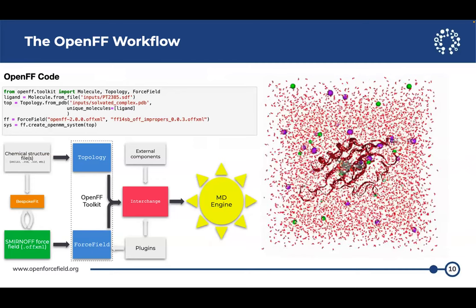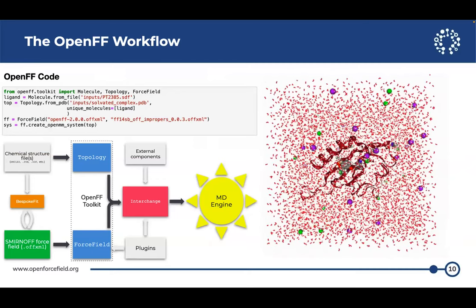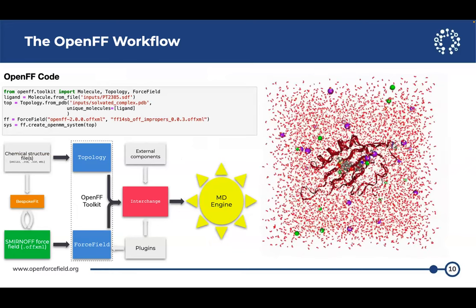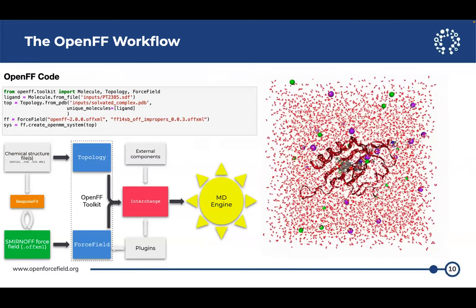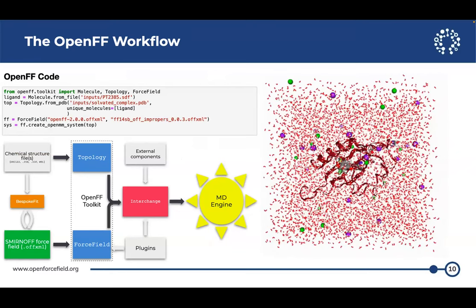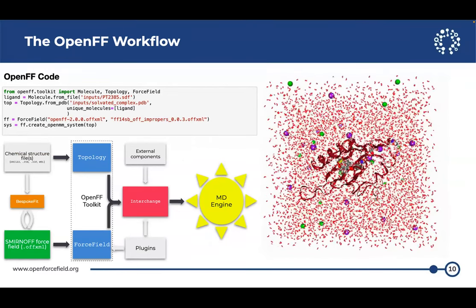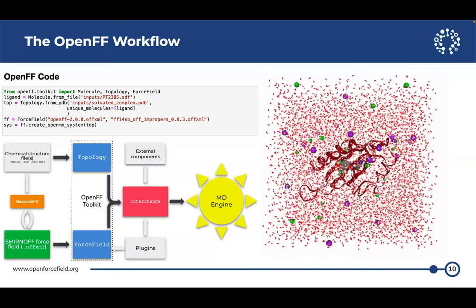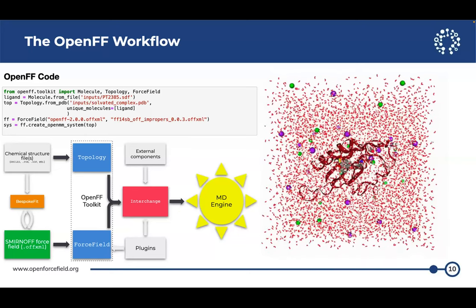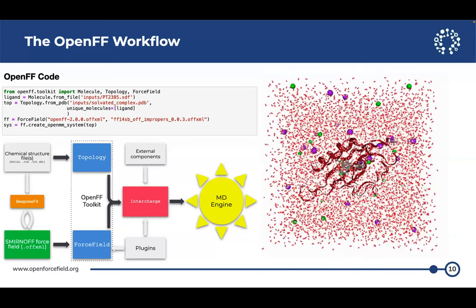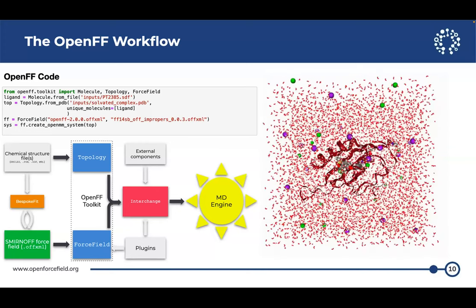I wanted to announce that topologies can now be created directly from PDBs. This came out somewhat silently in a release about three weeks ago. Where it used to be a very painful process of loading all components from PDB one at a time — here's a protein, now let's go get some waters — now we can load a box with proteins, waters, salts, and small molecules, provided they have CONECT records.